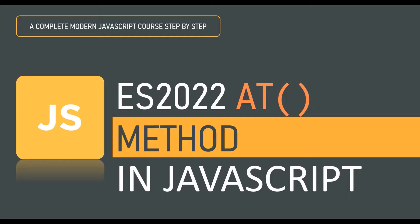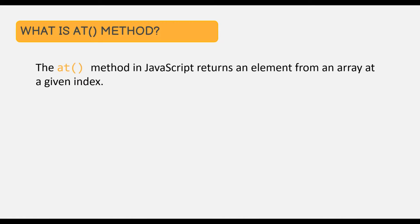In this lecture, let's learn about a new array method in JavaScript which was introduced in ES2022, and that is the at method. The at method in JavaScript returns an element from an array at a given index. Let's understand this practically.